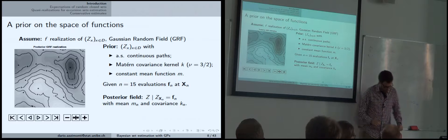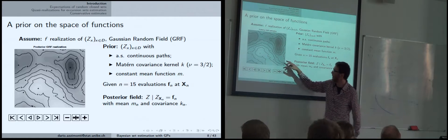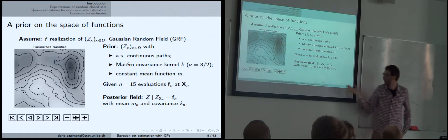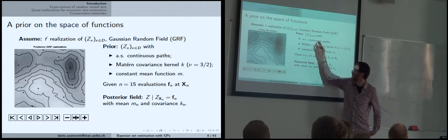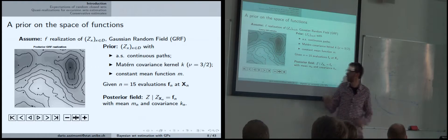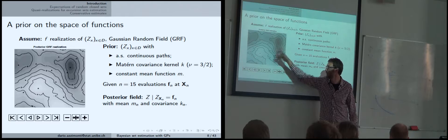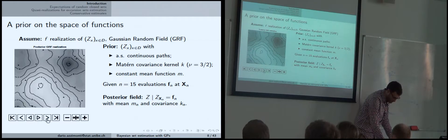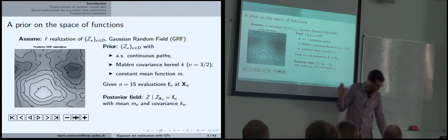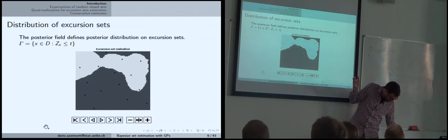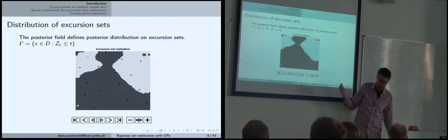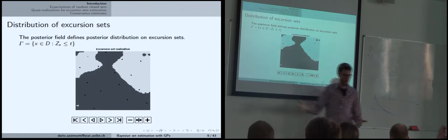To make it more concrete: for the example where evaluations come from a Gaussian random field realization, we get a posterior field. Since we know the mean and covariance kernel, we can draw realizations. For each realization, we can threshold — the threshold here was one — to obtain several realizations of the excursion set. This is what I mean by this being a random object: we have several realizations.